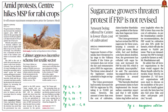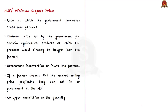This news article reports about the minimum support prices that have been announced. Currently rates are fixed for 23 crops, and crops like oilseeds and pulses such as mustard, safflower and masoor dhal have received higher MSP hikes of up to 8% in a bid to encourage crop diversification. The MSP or minimum support price is the rate at which the government purchases crops from farmers — it is the minimum price set by the government for certain agricultural products at which they would be directly bought from farmers.